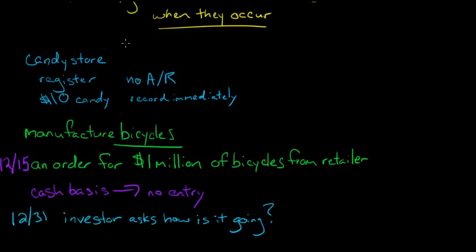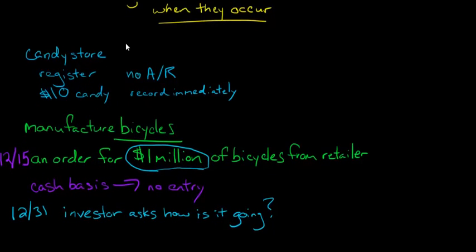The investor wants to know how you're doing now. You've made this sale. And unless you have some reason to believe that you're not going to receive this million dollars, maybe this retailer is going bankrupt or something, unless you have some reason to believe that, you've got a million dollars in sales here for all intents and purposes. It doesn't matter that you haven't received the cash yet. You'll get that in February. So the investor wants to know, how are things going now?